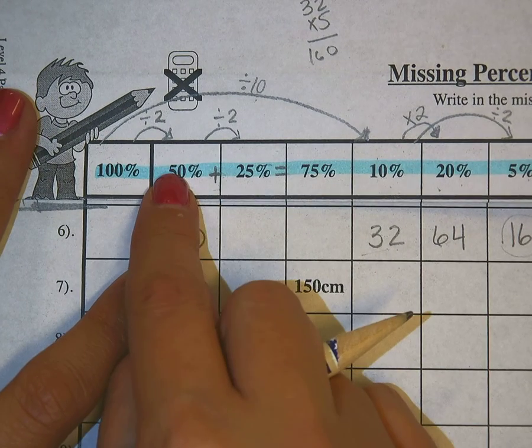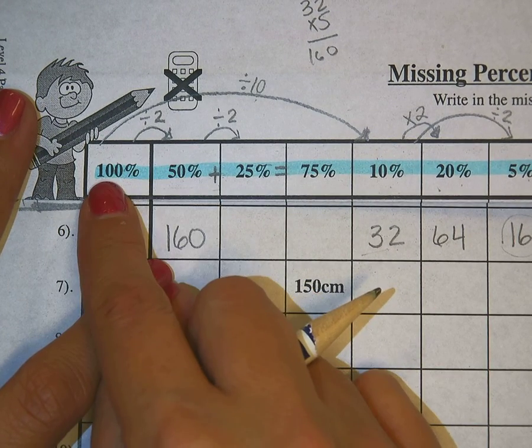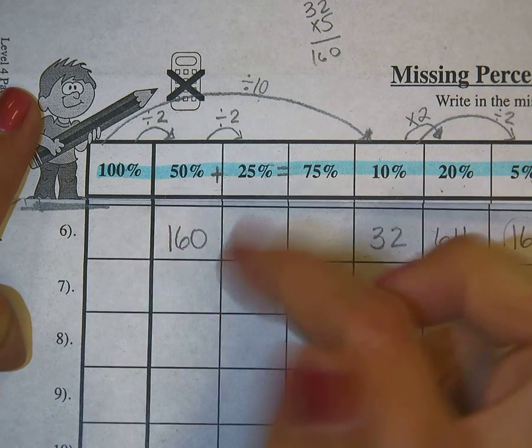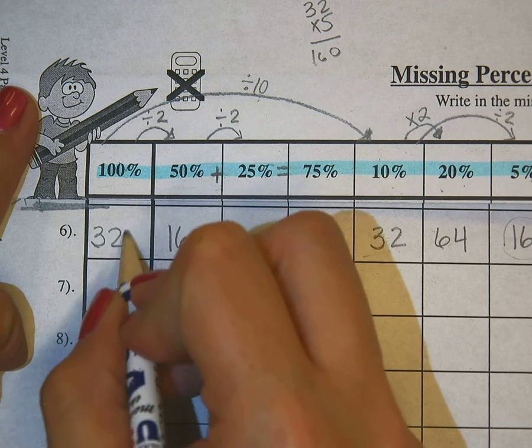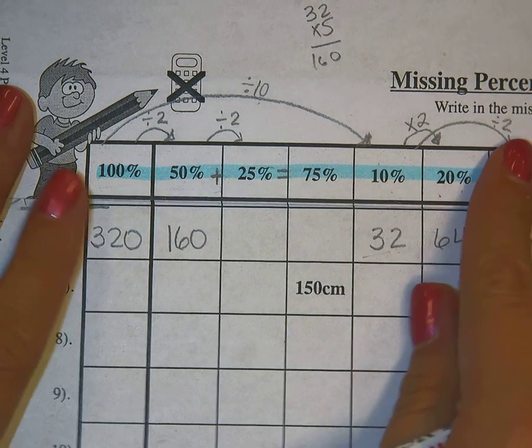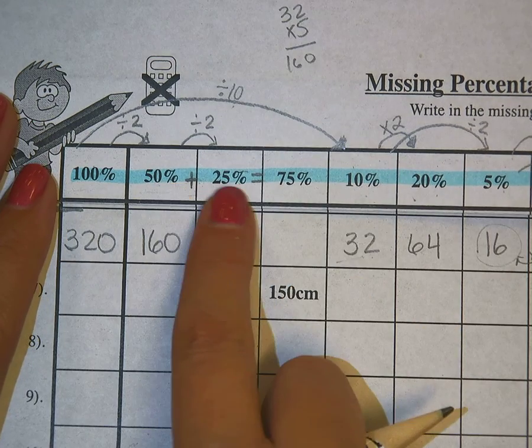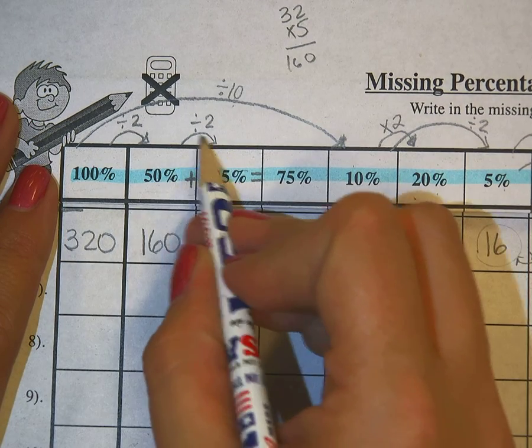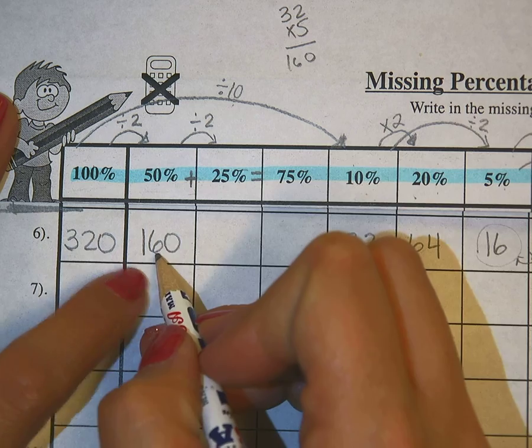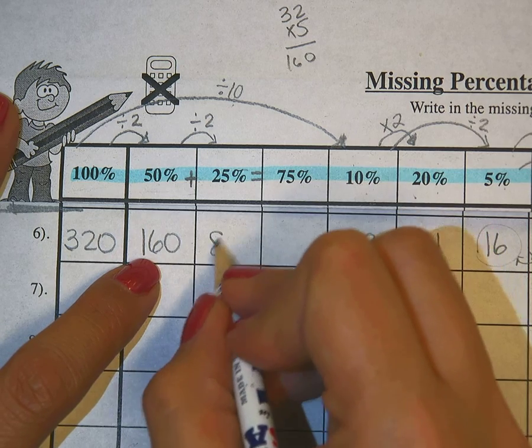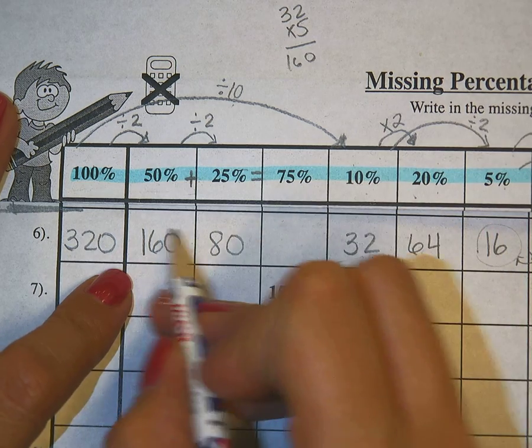Because I know 50%, I can double that to get 100%. So this doubled is 320. And 50% to 25%, I'm reminded, is divided by 2. So half of 160 is 80.